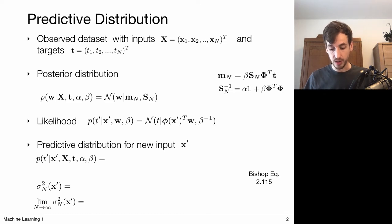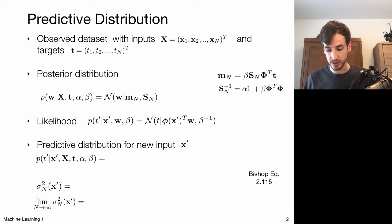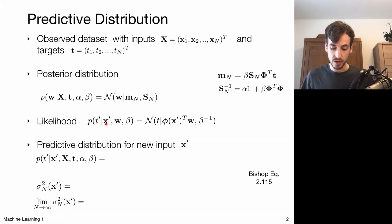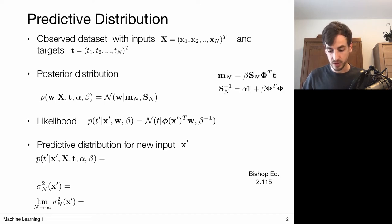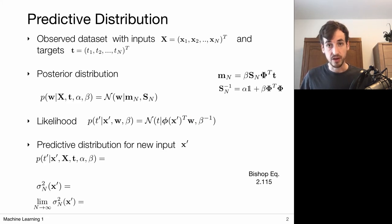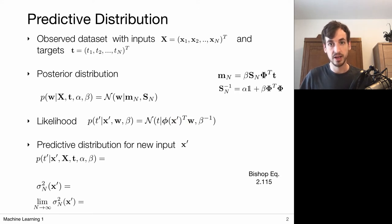The setting is as always: we have observed inputs x1 up to xN, which we can put into one big data matrix, and we have corresponding observed target variables t1 up to tN as one big vector of length N. Our goal is to come up with a predictive distribution — meaning that given a new x prime, what would be the probability of the corresponding target value? We model these predictive distributions as Gaussians centered around a mean given by our model, which maps input x prime to a mean value parameterized by w, and around this mean we have some uncertainty, usually a hyperparameter beta.